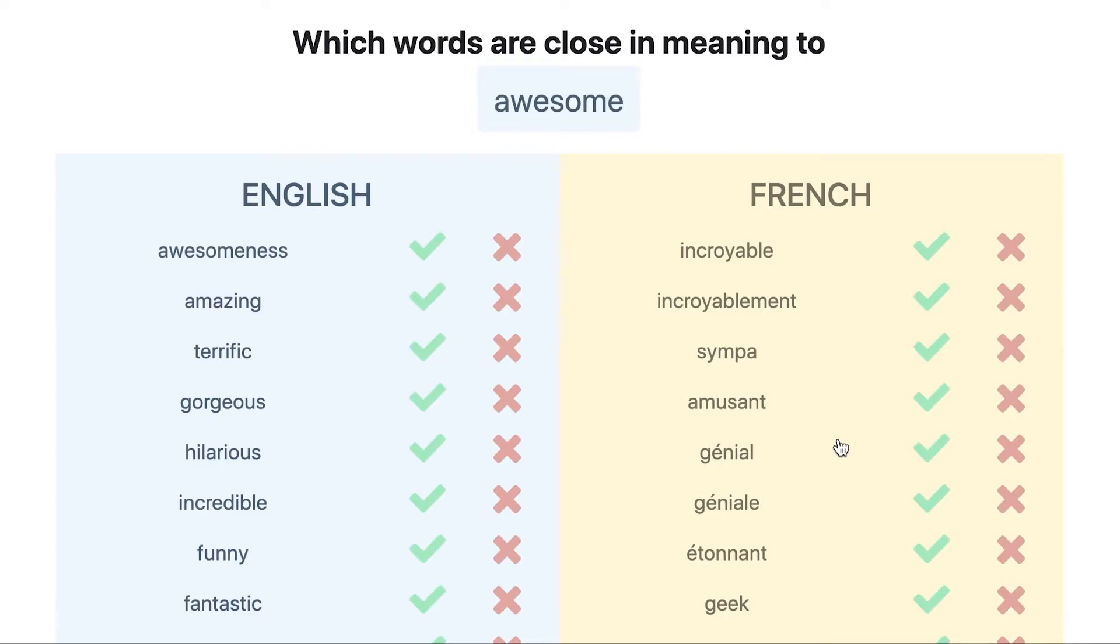This is the user interface for CLIME. On top is the keyword chosen by gradient-based salience. On the left are the English nearest neighbors for awesome. On the right are the nearest neighbors in French for awesome.